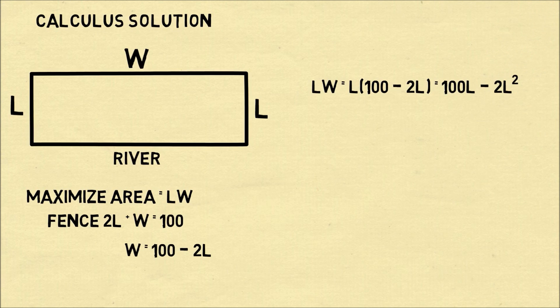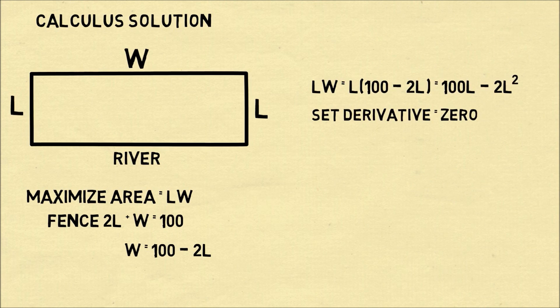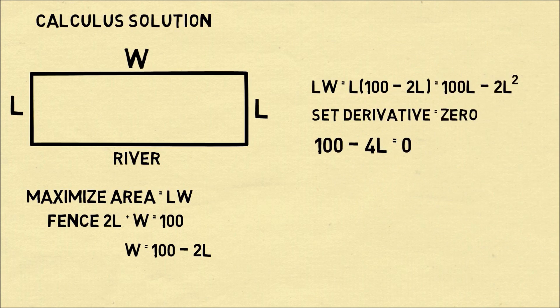Substituting that into our area formula we have the area is 100L minus 2L squared. We can optimize the area as a function of L by taking the derivative with respect to L and setting that equal to 0. So we get 100 minus 4L equals 0.